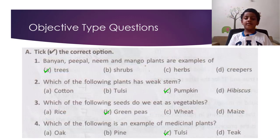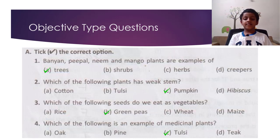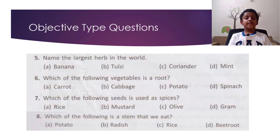Question 4: Which of the following is an example of medicinal plants? The answer is tulsi. Question 5: Name the largest herb in the world? The answer is banana.